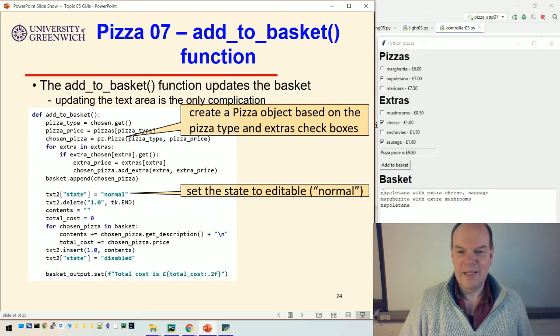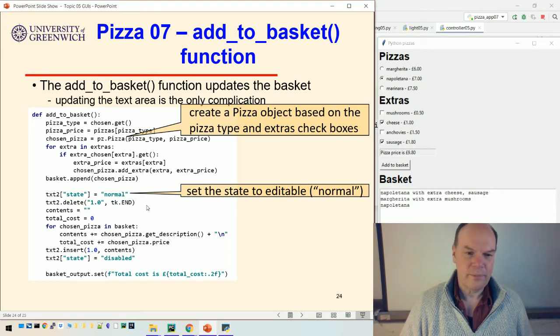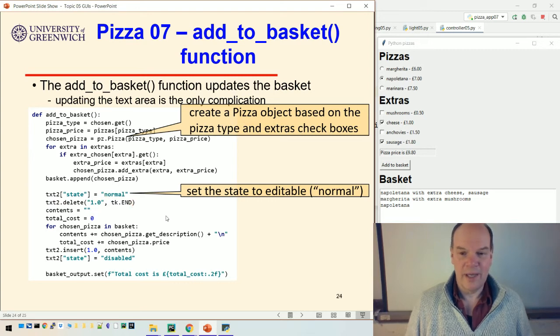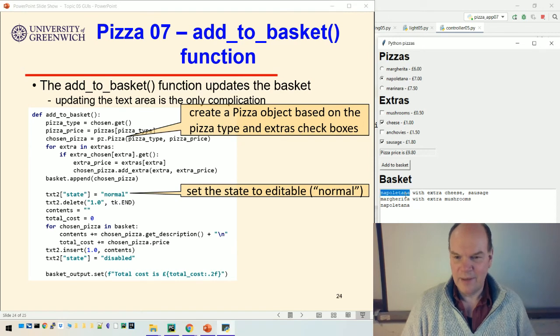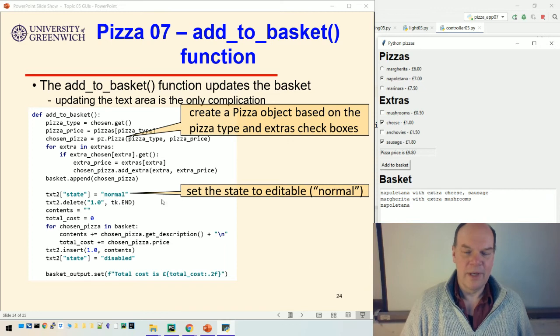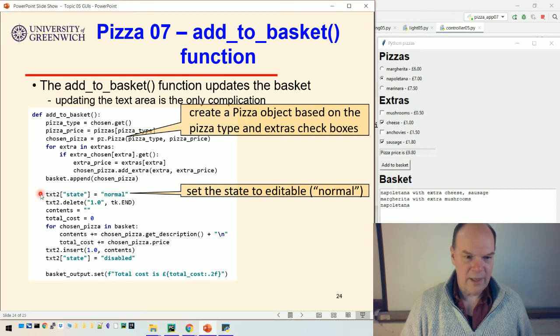This bit of text is a bit, I never find that these entries are particularly easy to understand. In terms of changing the text, text two is this text field here, this text area rather. Text two sets the state to normal so that, because normally this isn't editable. If I try and type in here, nothing happens. I'm typing, hitting the keyboard, nothing happens. So in order to change the text in here, I have to make it editable. So I set it to normal. And then I delete everything.